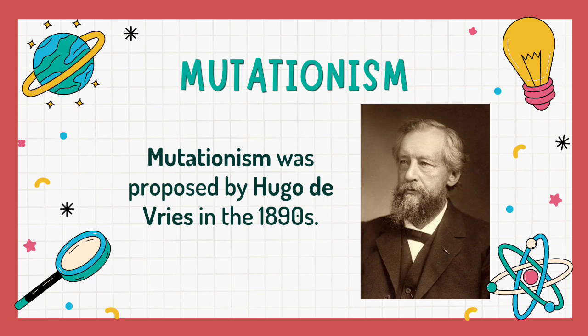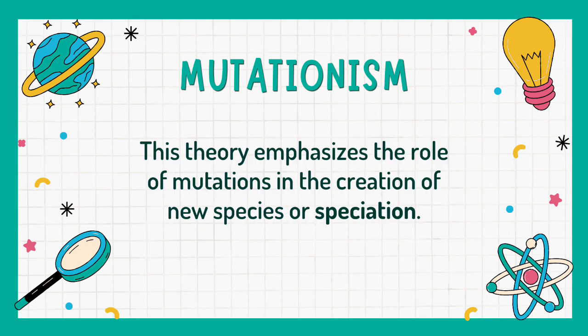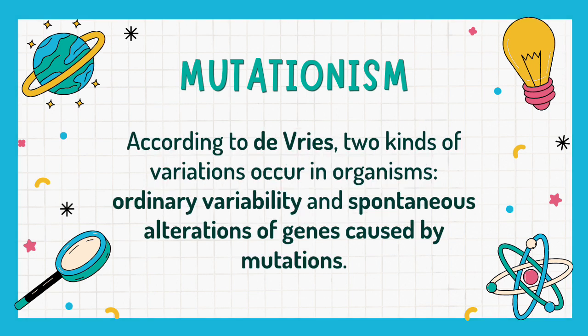Mutationism is an evolutionary theory proposed by Hugo de Vries, together with other scientists, sometime in the 1890s, following the rediscovery of Mendelian theory of heredity. This theory emphasizes the role of mutations in the creation of new species, or speciation. According to de Vries, two kinds of variations occur in organisms: ordinary variability and spontaneous alterations of genes caused by mutations.